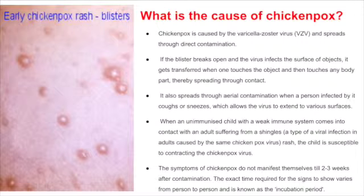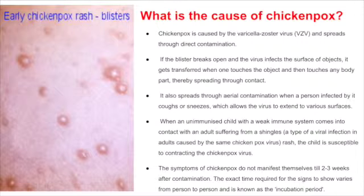If the blister breaks open and the virus infects the surface of objects, it gets transferred when one touches the object and then touches any body part, thereby spreading through contact. It also spreads through aerial contamination when an infected person coughs or sneezes. When an unimmunized child with a weak immune system comes into contact with an adult suffering from shingles — a viral infection in adults caused by the same chickenpox virus — the child is susceptible to contracting the chickenpox virus.